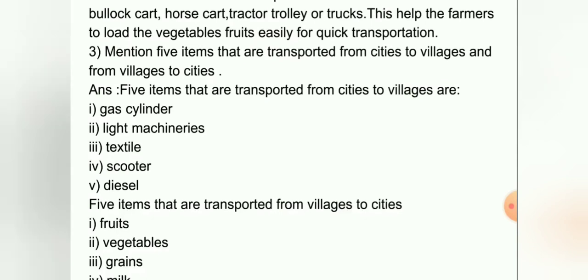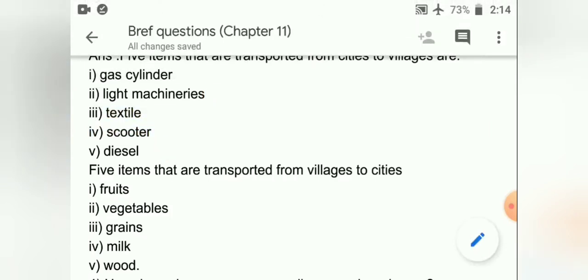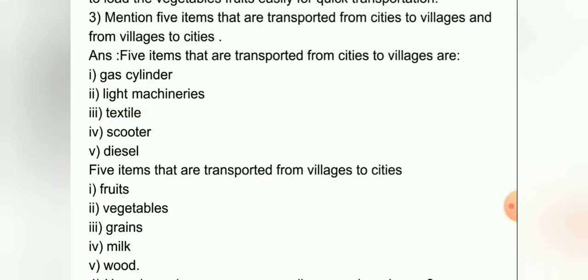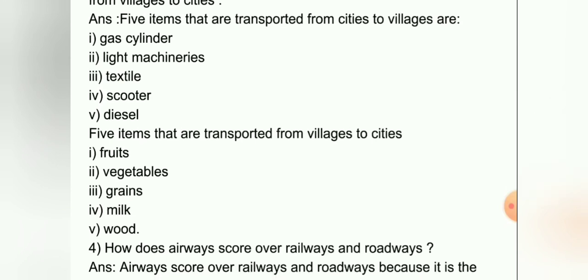Question number three: mention five items that are transported from cities to villages and from villages to cities. Five items that are transported from cities to villages are gas cylinder, light machineries, textile, scooter, and diesel.